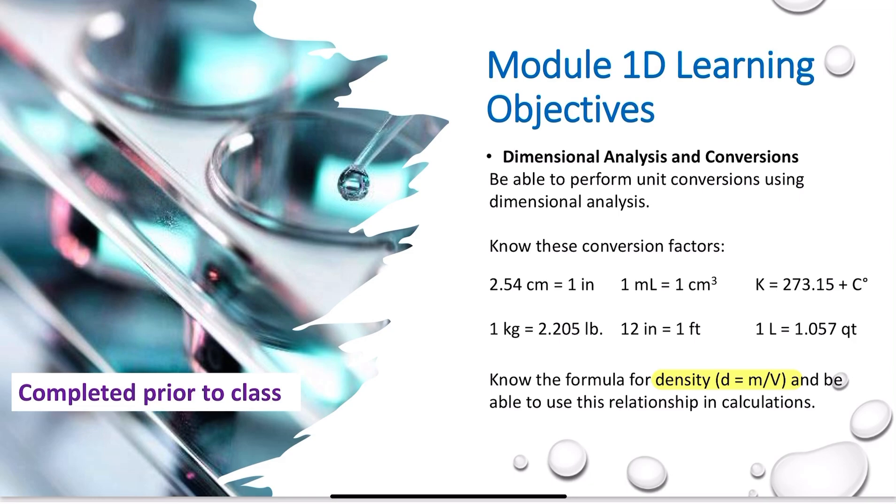You should be able to do dimensional analysis, and we're going to do it in a specific way. I want you to follow that pattern, even if you learned it a different way. You need to know these conversions. These are not an exhaustive list - you will see others throughout the semester, but these are just to get you started. And absolutely know the formula for density. If you do not already, memorize it now. Density is equal to mass over volume, d = m/V, and that is an important conversion. We use density a lot throughout Gen Chem.